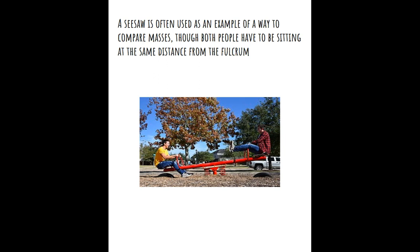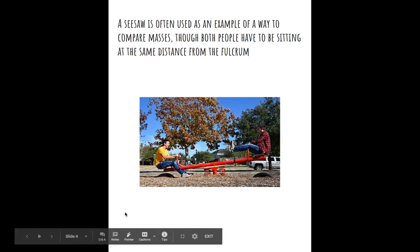We can also look at a seesaw. This is another example of a way to compare masses. Both people have to be sitting the same distance away from the fulcrum. The fulcrum is in the center of the seesaw. This person is sitting this distance from the fulcrum and the other person is the same distance the other direction. And we can see this person has a greater mass.